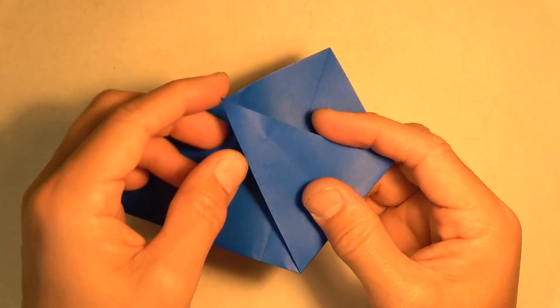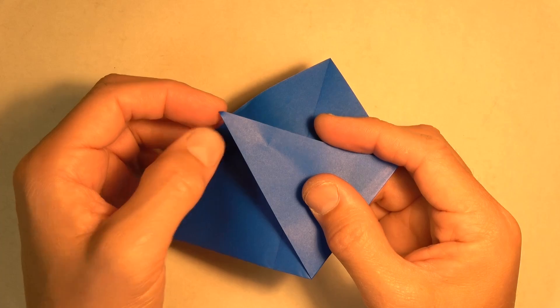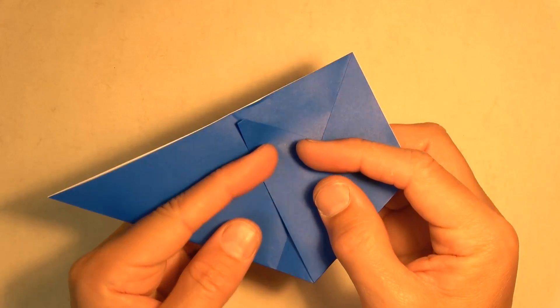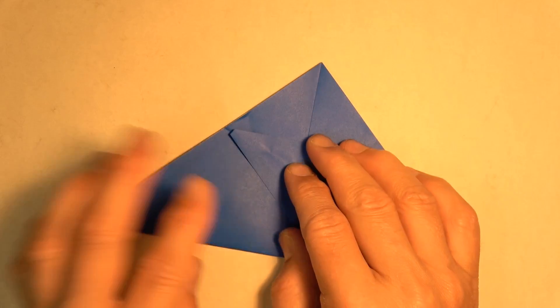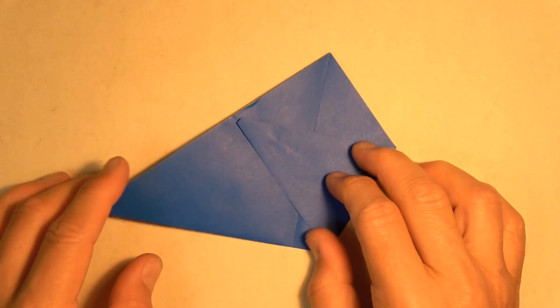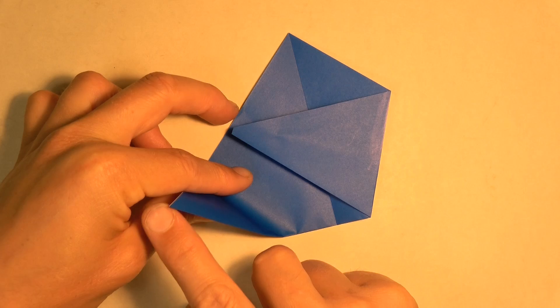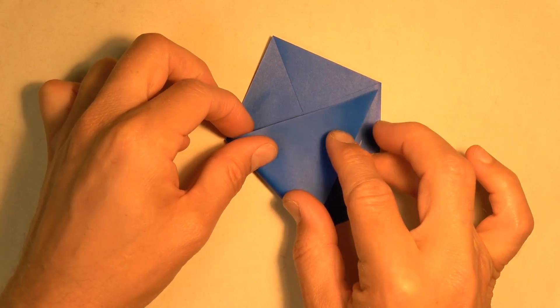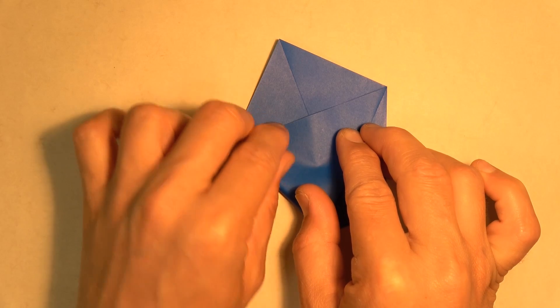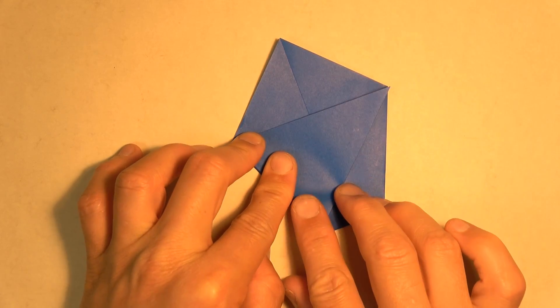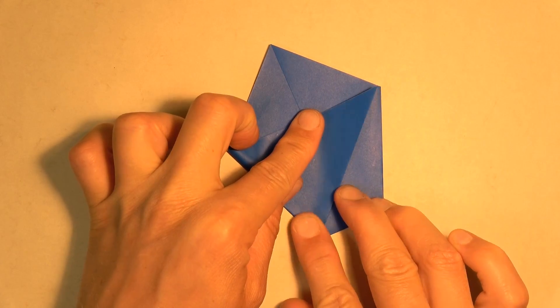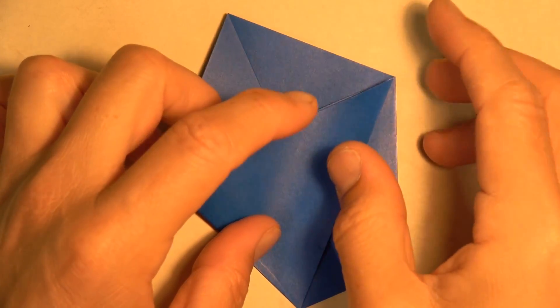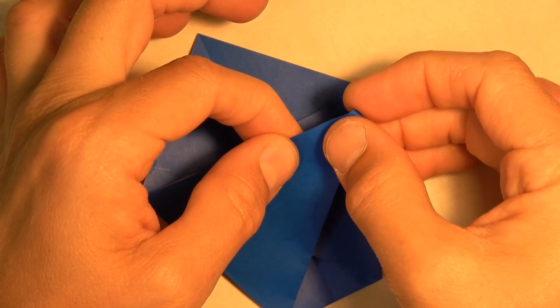Now we're going to fold the tippy-tip behind, about like that. And now let's fold this flap so that this corner touches this corner. And once again, let's fold the tippy-tip behind.